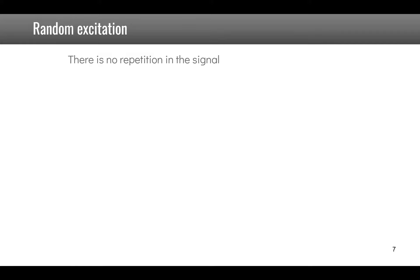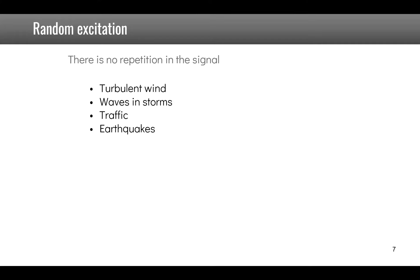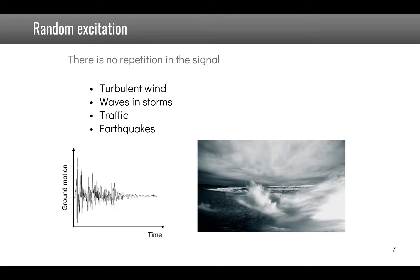Random excitation occurs when there is no repetition in the signal. Examples include turbulent wind, waves and storms, traffic, or earthquakes.